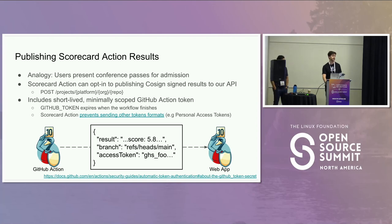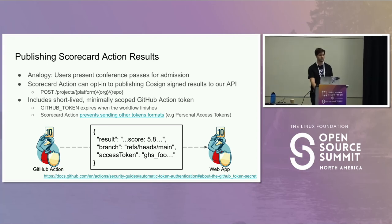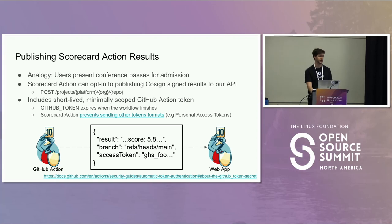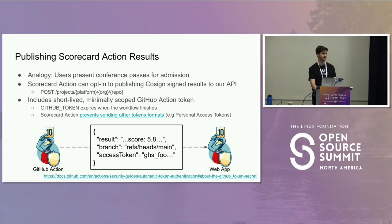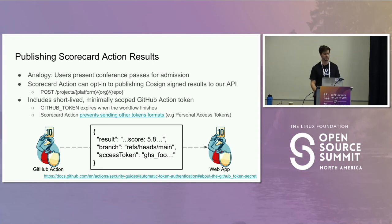When a repository opts in to publish their scores, this is what helps us scale. We are currently running Scorecard on over a million repositories every week, but there are processing and token constraints since we're hitting the GitHub API. A repository can install the action and publish their results to be part of our dataset. We don't want to accept just any results — we don't want someone saying they earned a perfect 11 out of 10 score. The analogy for the next few steps is how repositories can present results and how we can verify them. When we push results from our GitHub action to the web app, the analogy is presenting a conference pass.